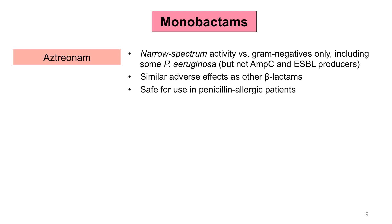We will briefly discuss the monobactam subclass of the beta-lactams. Aztreonam, the only available monobactam in the U.S., is narrow-spectrum in that it is only active against gram-negative bacilli, and therefore often needs to be used in combination with anti-gram-positive agents in the context of empiric broad-spectrum IV coverage for severe or polymicrobial infections. Aztreonam is relatively safe to use in patients who carry a history of penicillin and/or cephalosporin drug allergy, as there is no cross-reactivity of aztreonam with the other beta-lactams with regard to allergy.